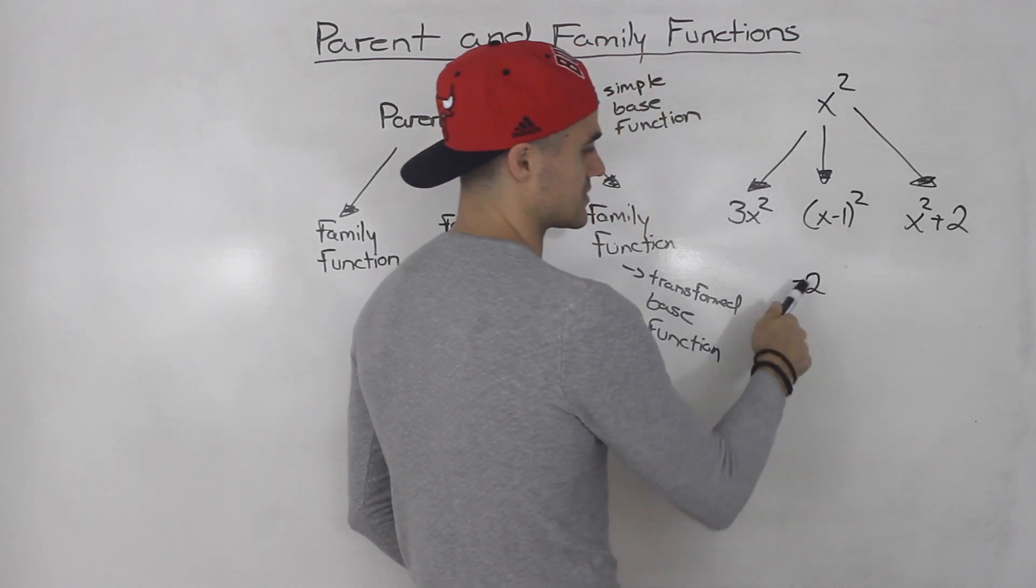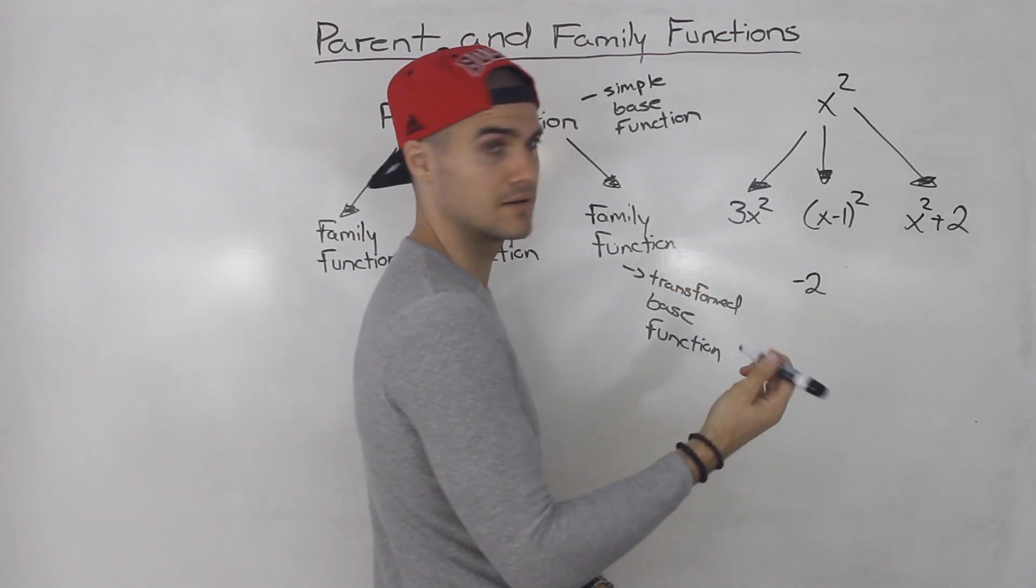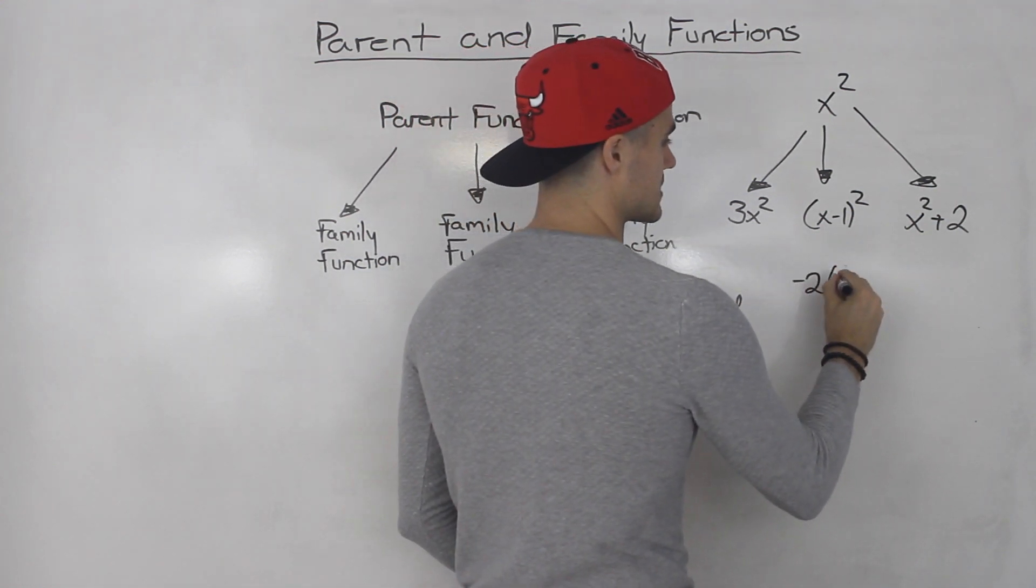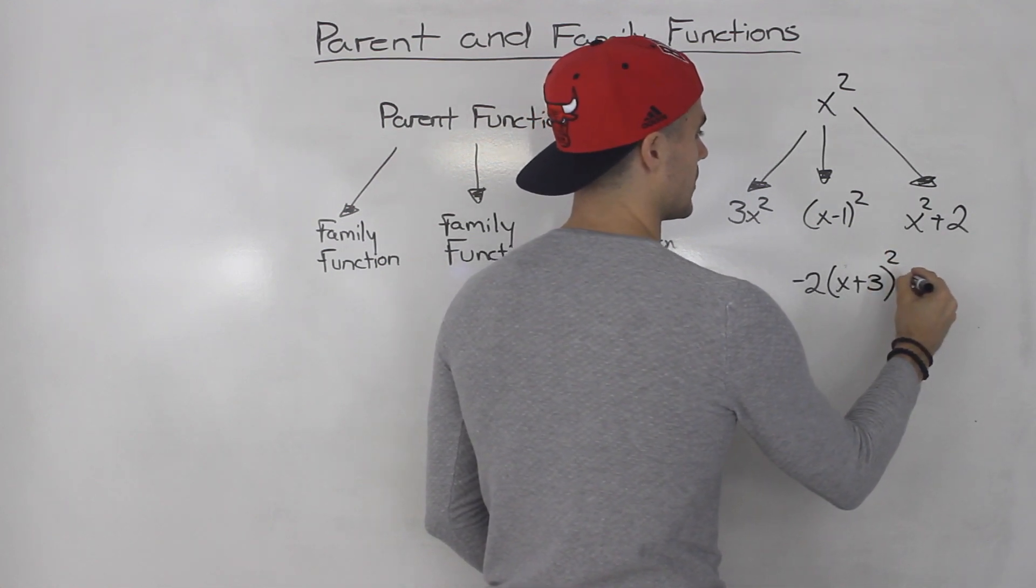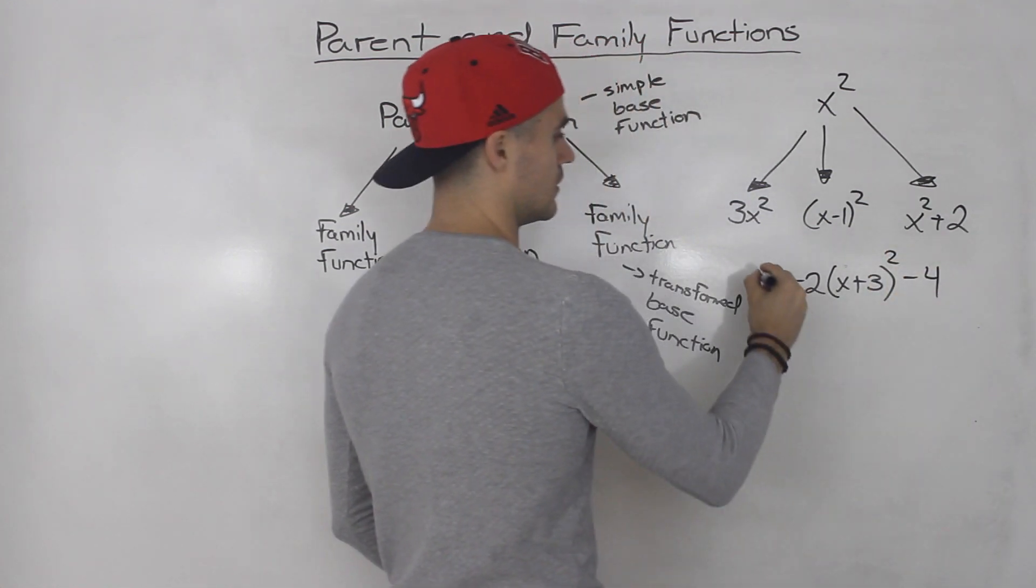So you've seen quadratics where maybe you'll have a vertical stretch. And then let's say there's a negative here, so it's also reflected in the x-axis. And then you're shifting it three to the left, and then maybe shifting it four down.